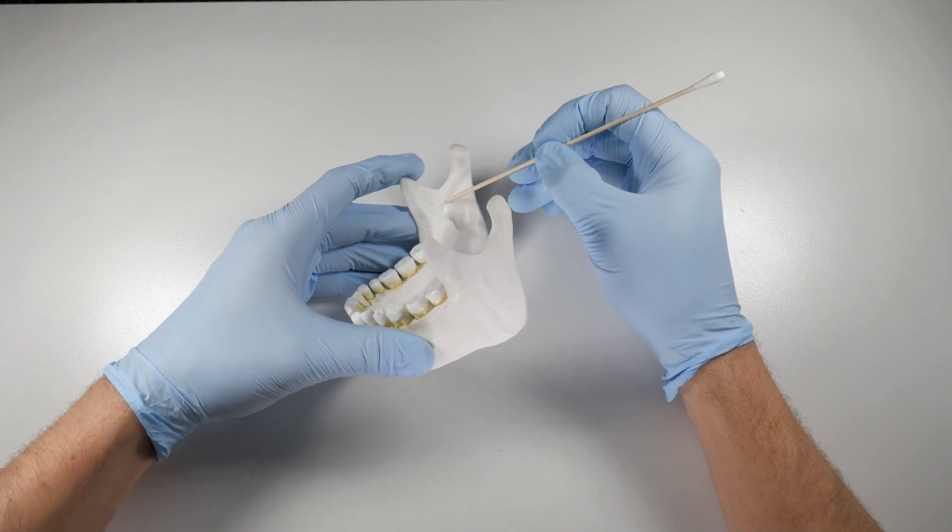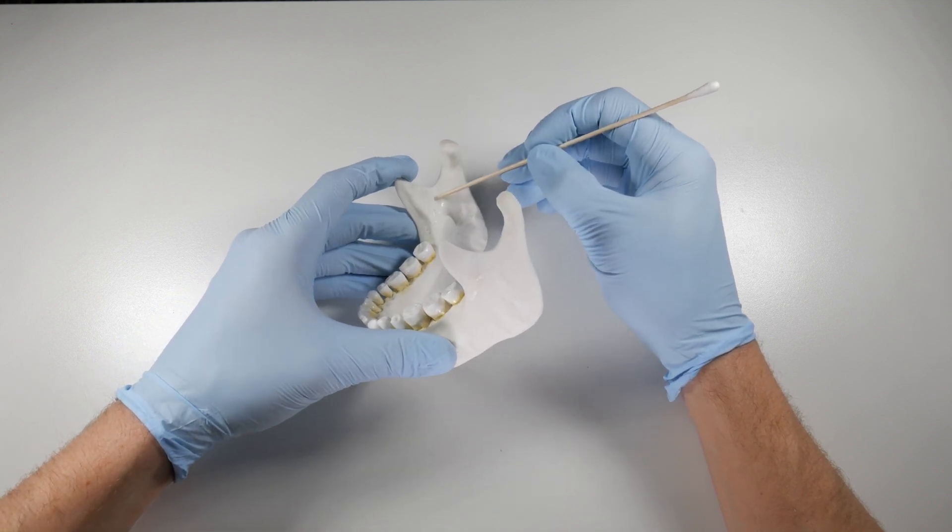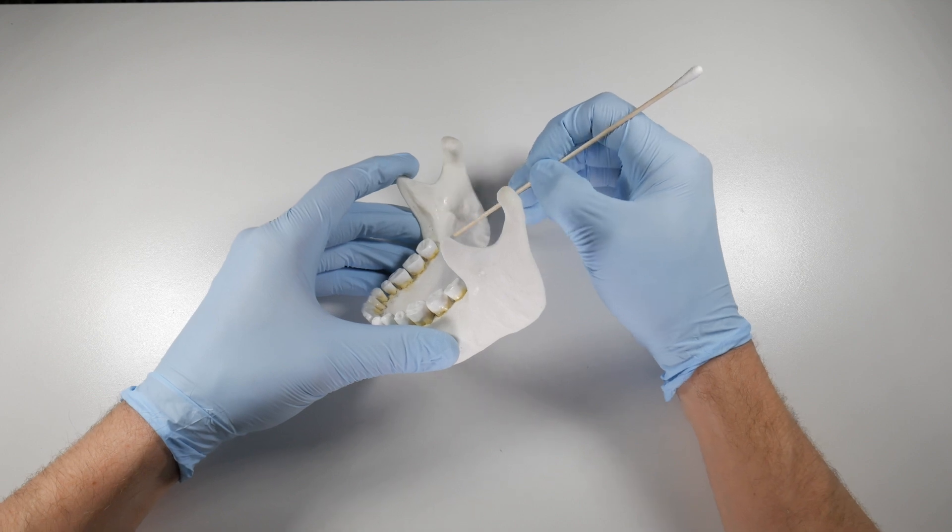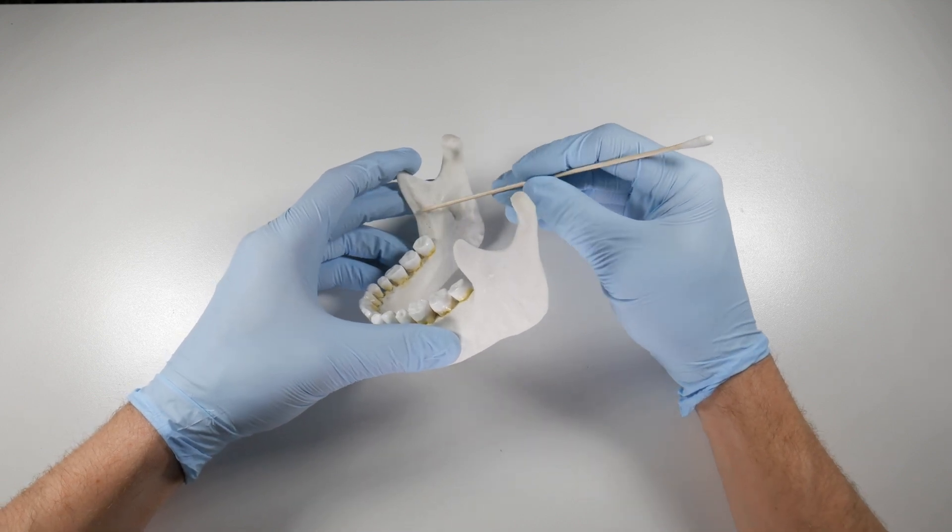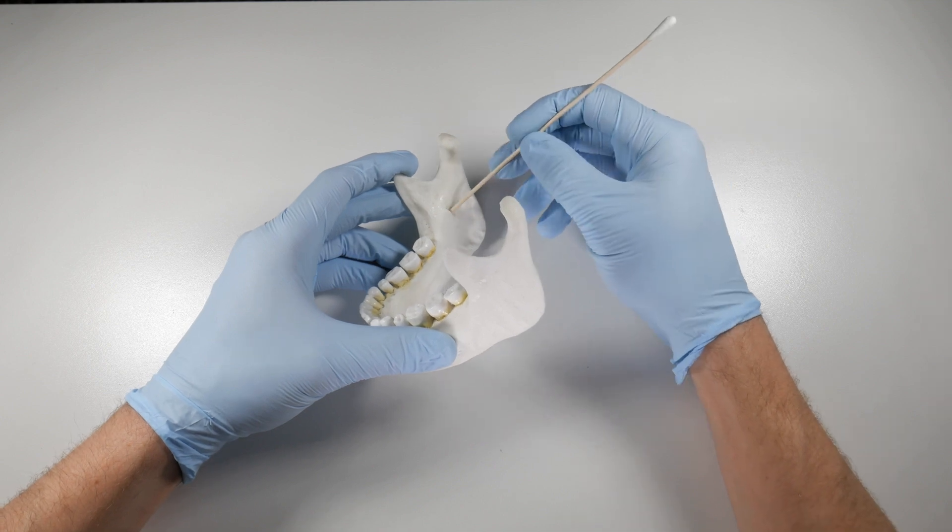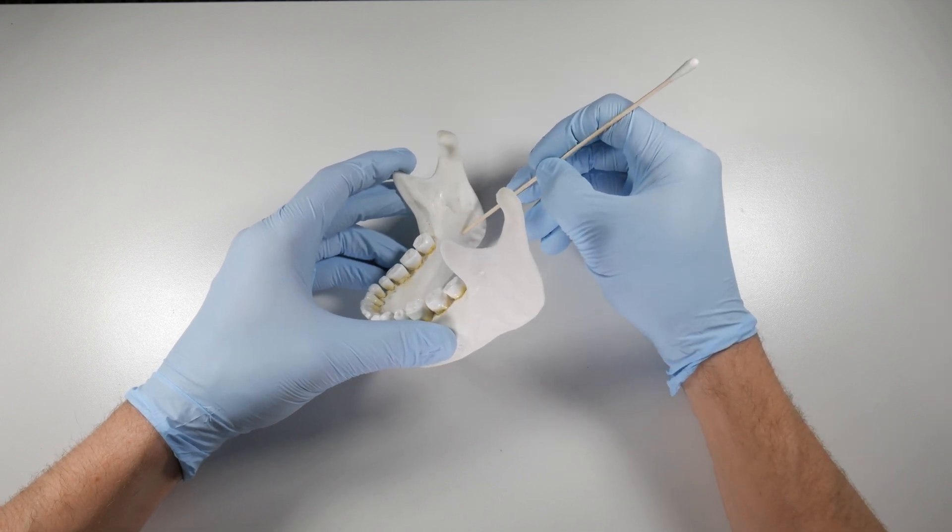So when we look at this, we want to miss high and we want to miss posterior. We don't want to miss anterior and we don't want to miss inferior, because if we do the odds of getting anesthetic into this foramen are pretty slim. Gravity will pull the fluid away from this area.